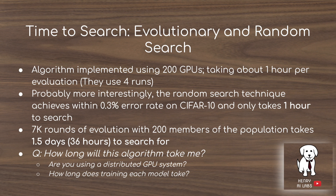An interesting aspect of the paper is the comparison of evolutionary and random search over the hierarchical space. Using 200 GPUs, it takes about one hour to evaluate each genotype. Interestingly, 200 random permutations of the directed acyclic graphs are sent to different GPUs, and in one hour 200 different neural networks are trained — with results within 0.3% error rate of the evolutionary algorithm. With evolution, they do 7,000 rounds with 200 members per population, taking about 36 hours to search.